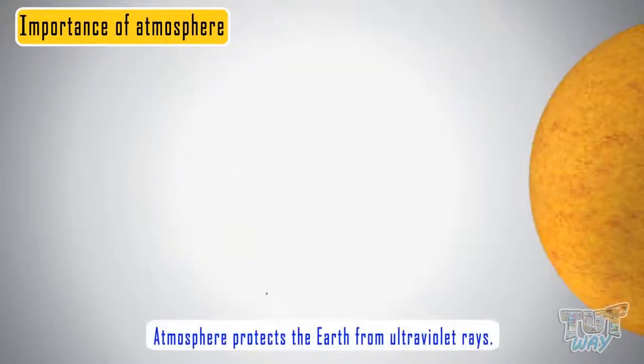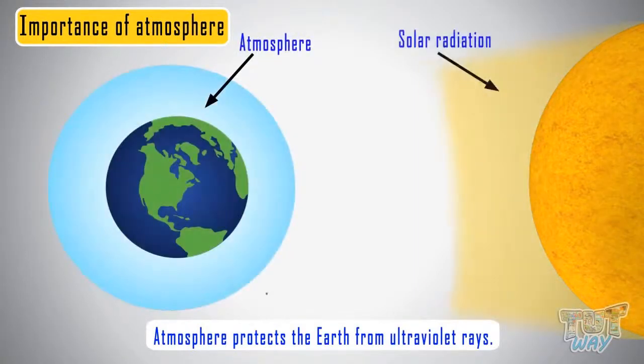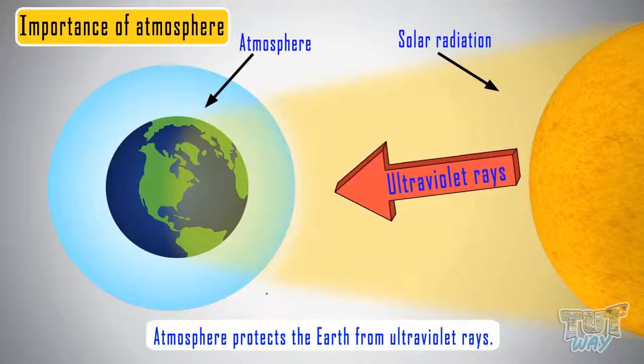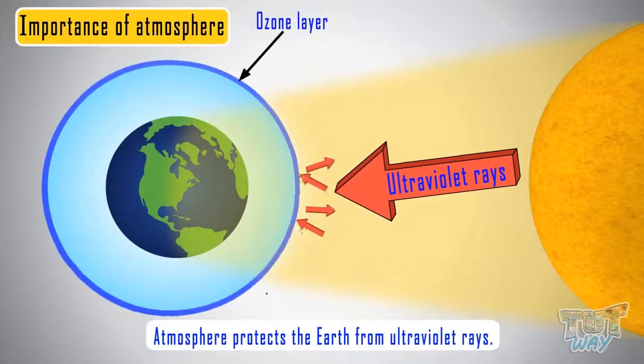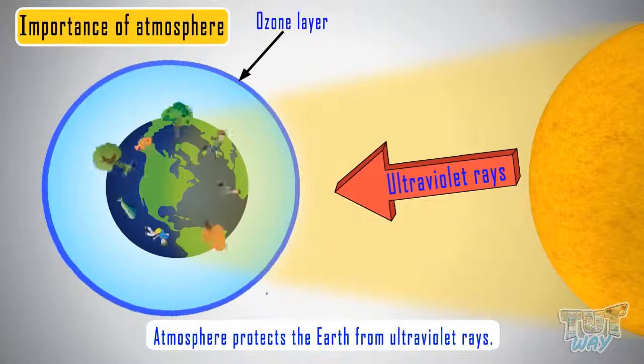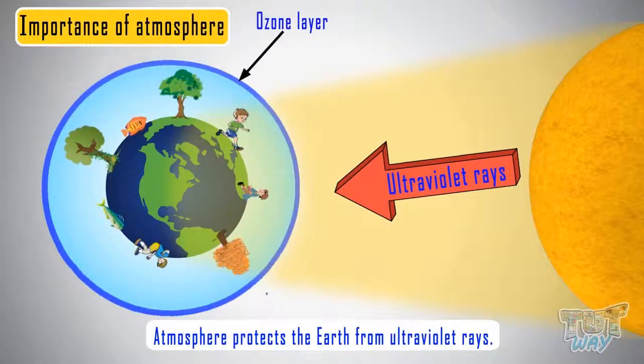The solar radiations or solar energy passes through atmosphere before reaching the Earth's surface. The solar radiations also contain harmful ultraviolet rays, and these harmful ultraviolet rays are filtered out by the ozone layer, which is a part of the atmosphere. And life on Earth gets only the good part of the solar radiations.